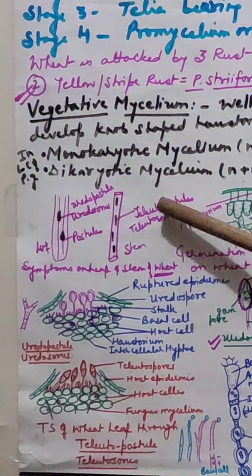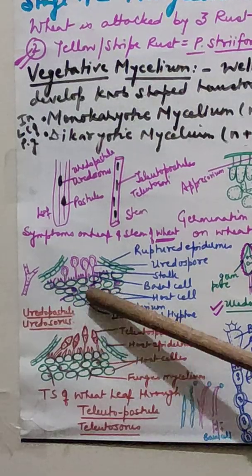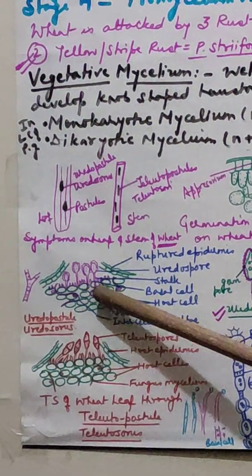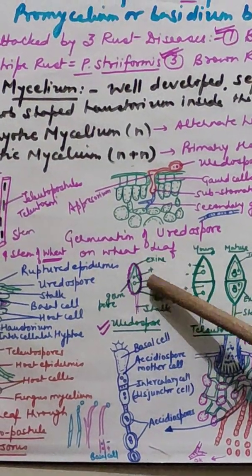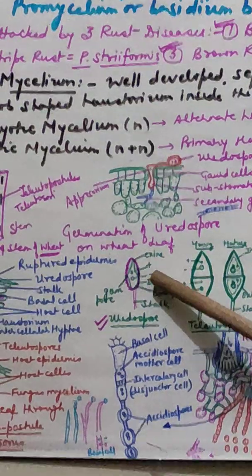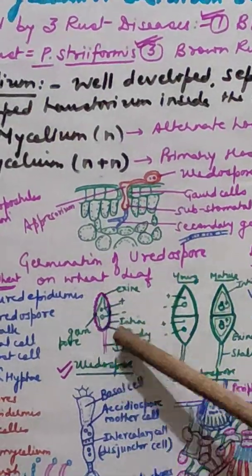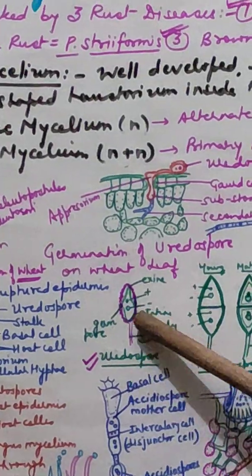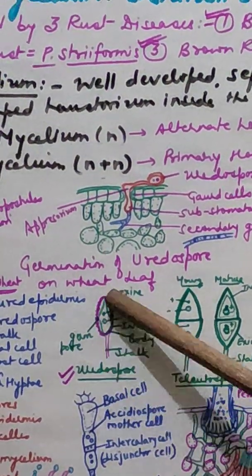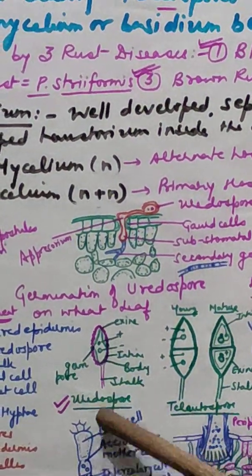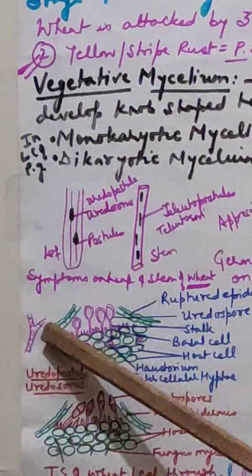If we cut a section through the uredopustule, we observe that the host cells have mycelium creeping between them. Some mycelium grows upward to form uredospores. The uredospore is a stalked, single-celled structure containing two nuclei — one of positive strain and one of negative strain. The outer wall is the exine, which is echinulate or ornamented, and the inner wall is the intine. Four germ pores are present equidistantly. These uredospores are also known as repetitive spores because they keep on germinating on the same leaf to form new uredia.